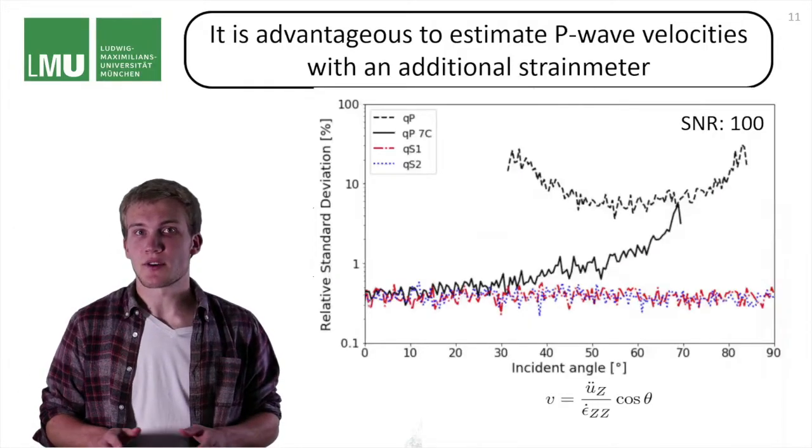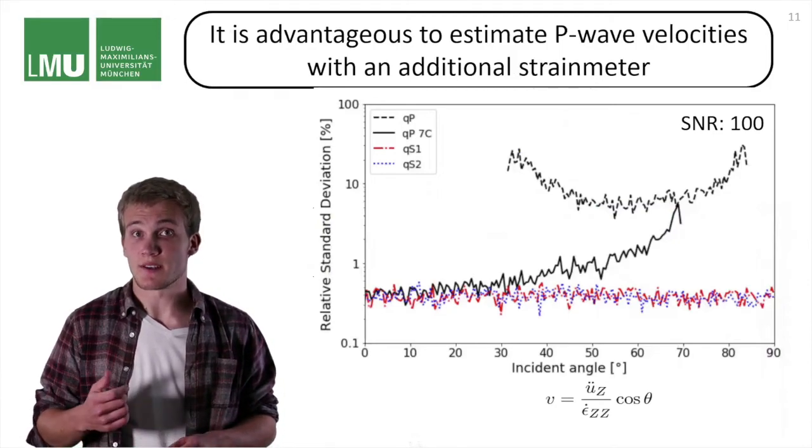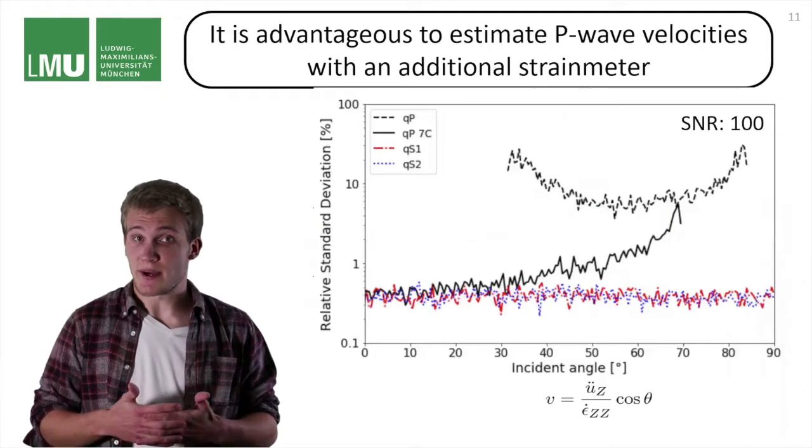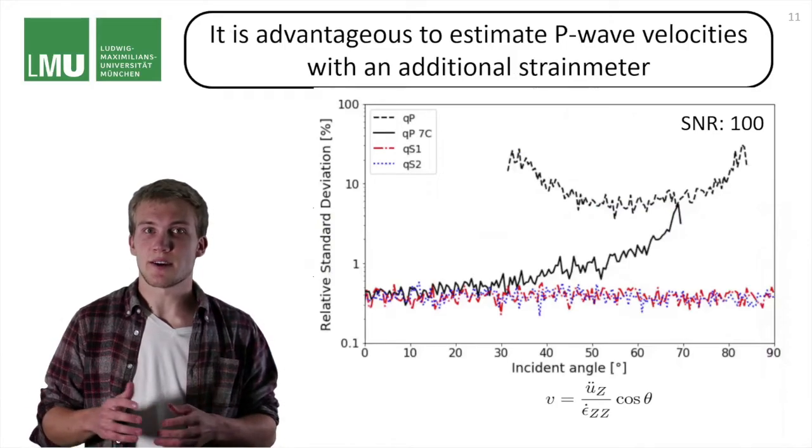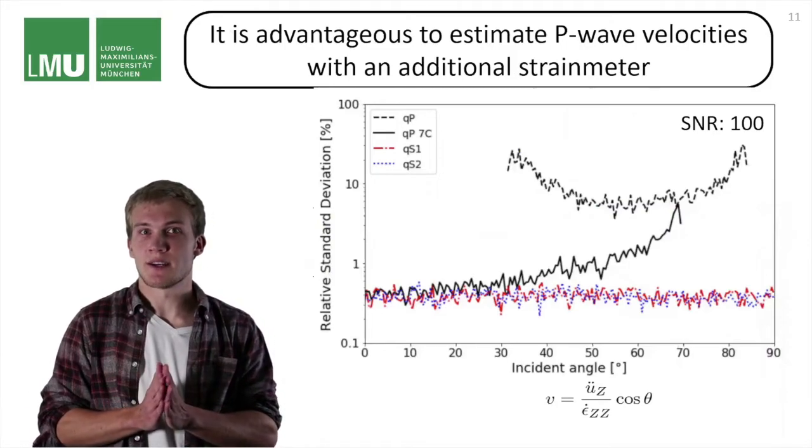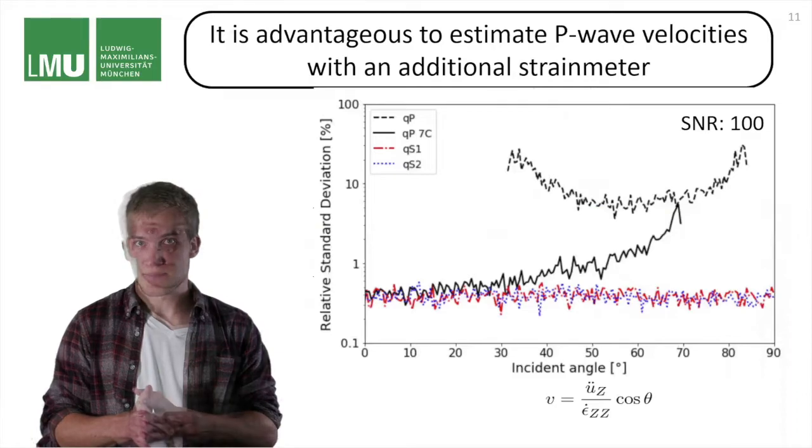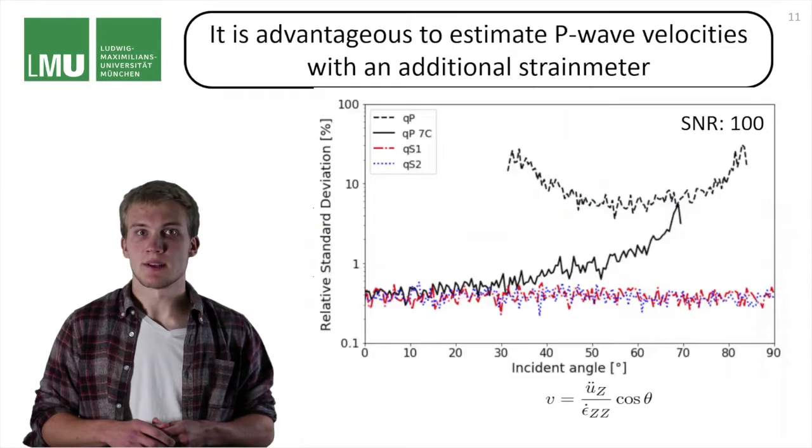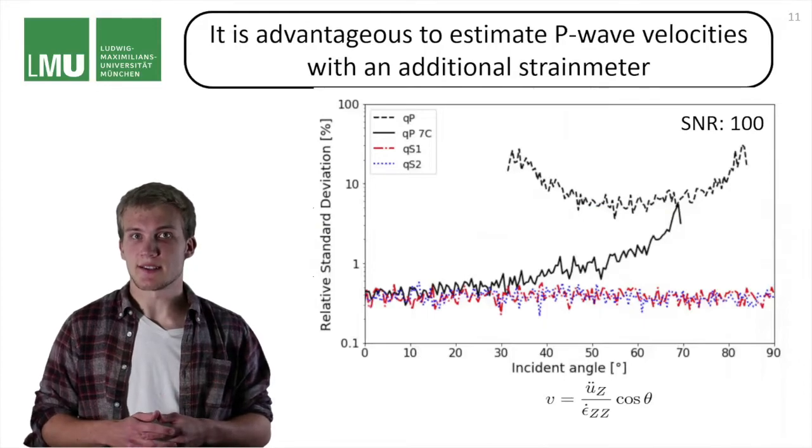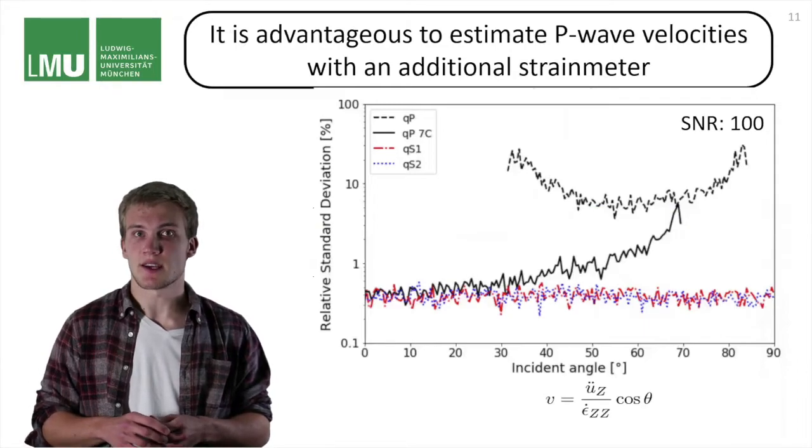We can take a look at the graph from before, but now with the added P wave velocity estimation from the strain. As you can see, it is better resolved, and for those angles or propagation directions that arrive parallel to the strain meter, the quality is almost as good as the S wave velocity estimations. With increasing angle, the resolvability of the P wave will decrease. That is true. But this effect is now due to geometry and not, as it was the case previously, due to the material for the rotational based P wave velocity estimation. And this is a huge advantage.